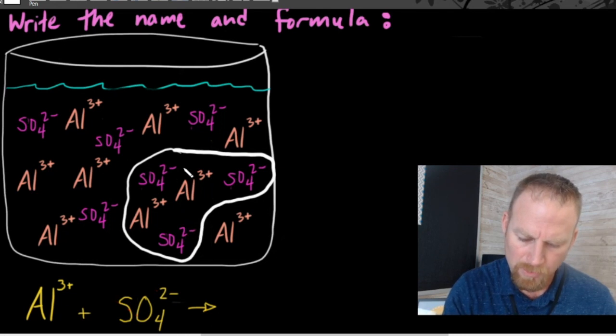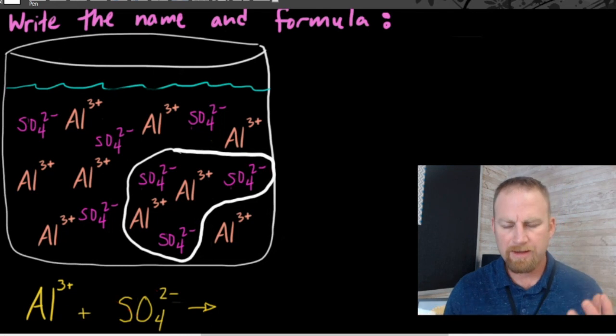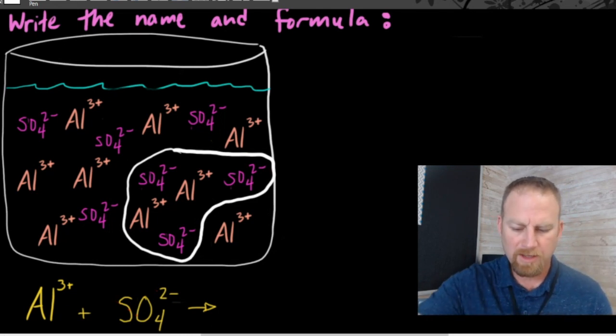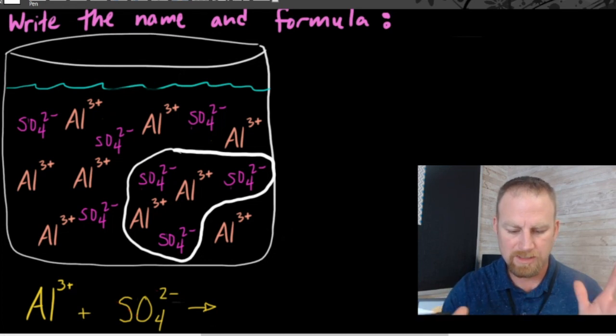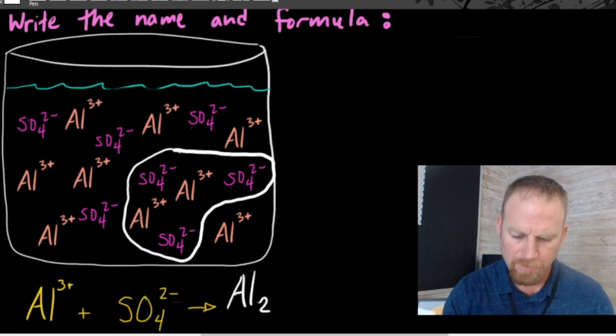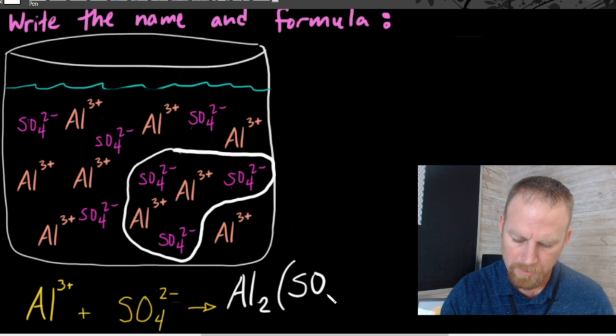That right there is going to be a stable compound and nothing else will be attracted to it. So then it stops. And so how do you write that as a formula now? Well, I have two aluminums, so I could write AL2 and I have three sulfates, SO4. So three SO4s. I have to use parentheses again and put SO4 with a three outside of that.